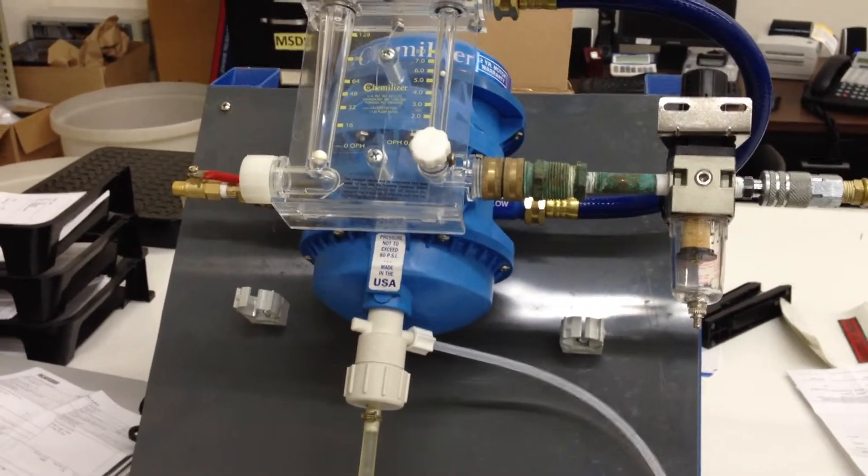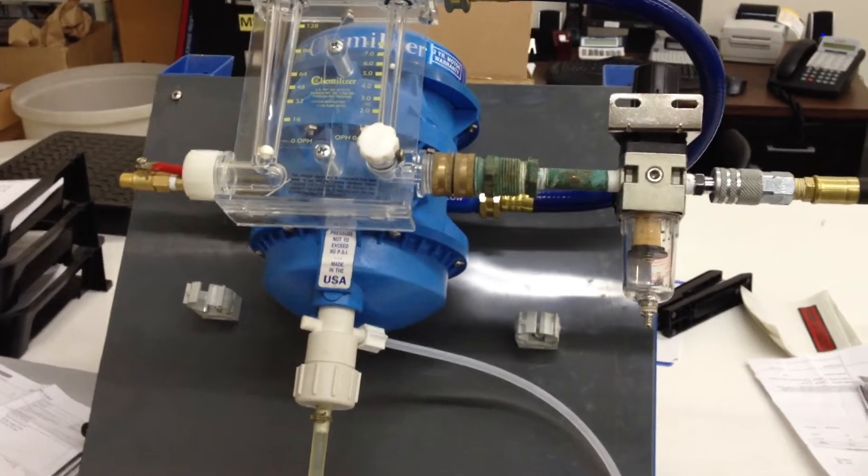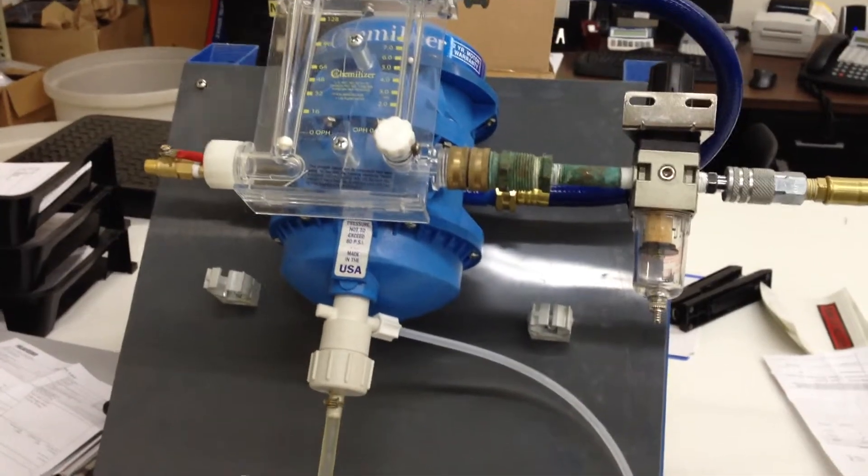This is a demonstration of running the Chemalyzer CP33. It's a water-driven pump, has a water motor, and in this example, we're running it off of air pressure.